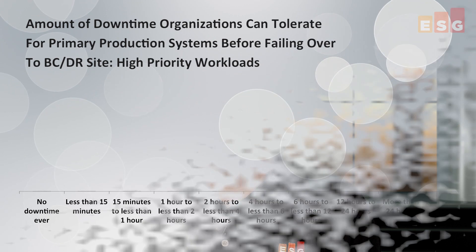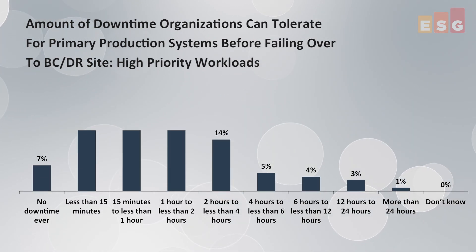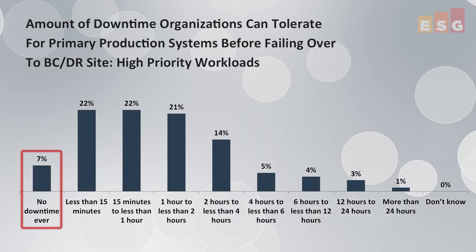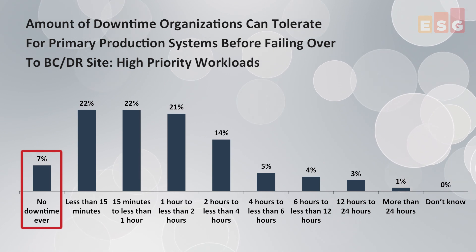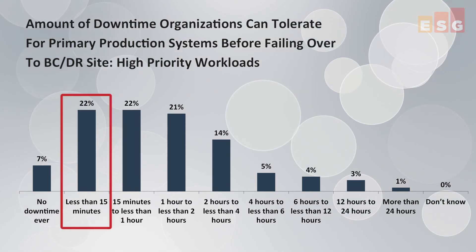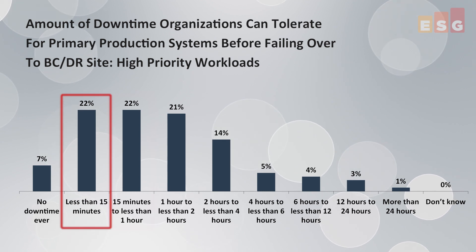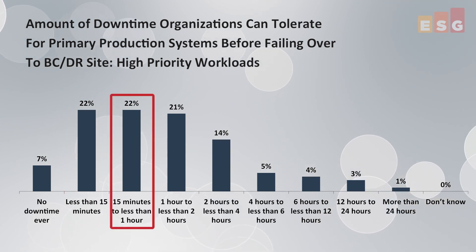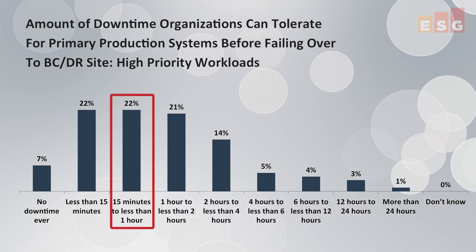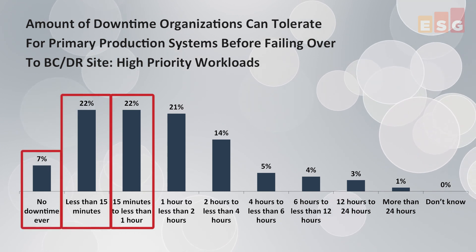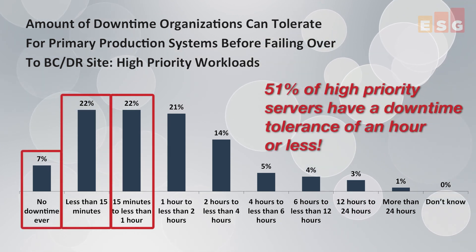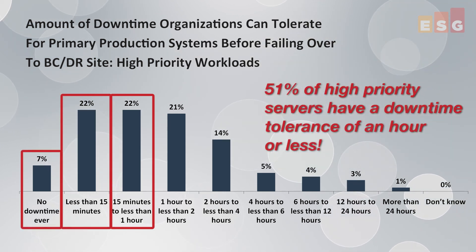To appreciate that idea in terms of ensuring data availability, consider the range of servers in your environment that have differing SLAs and business criticality today. Even among high priority servers, there are different SLAs. 7% have absolutely no downtime tolerance at all. 22% have a downtime tolerance of 15 minutes or less. Another 22% have a downtime tolerance of up to an hour. Collectively, over half of the high priority servers in the environment have a downtime tolerance of an hour or less.